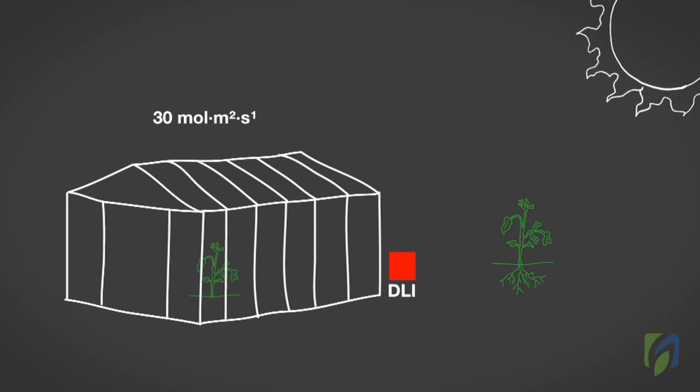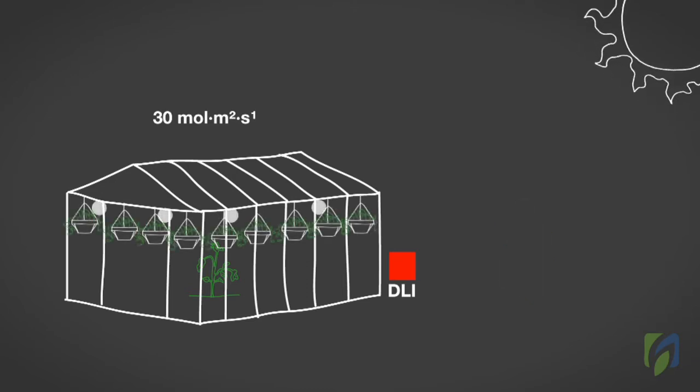The reason DLI is reduced inside the greenhouse is because of the shading caused by hanging plants, overhead equipment, pipes, and greenhouse structural supports.